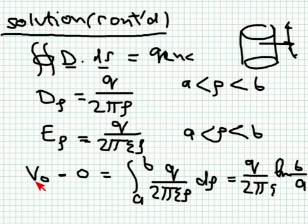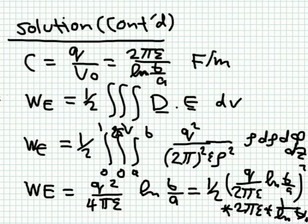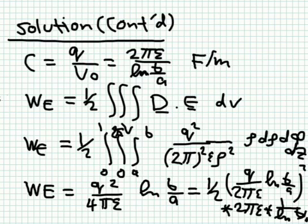Now we have the voltage difference V₀ and the charge per unit length Q. Dividing Q by V₀ gives the capacitance per unit length: C = 2πε / ln(B/A), in farads per meter. This is the capacitance of one meter of the coaxial cable since it extends to infinity. To calculate the stored energy, we integrate ½ D·E over the volume between the two conductors, because there is no field outside the outer conductor — all energy is localized between the conductors.